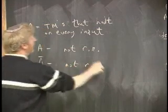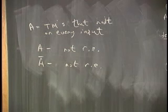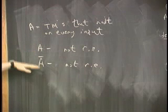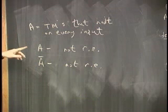So this is an example, and it's the first example, of a set that is just completely beyond our grasp in every way. The set itself and its complement are not recursively enumerable. We cannot recognize either the set or its complement.